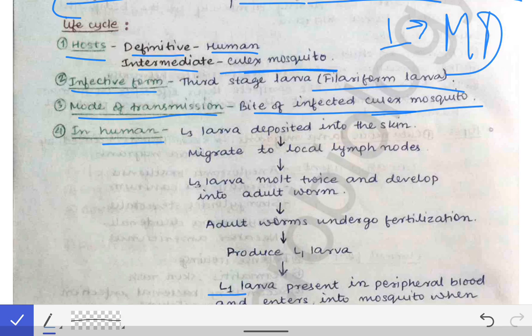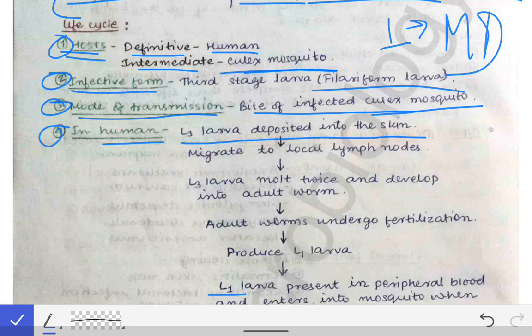When writing the life cycle of any parasite, start with the host, then the infective form, then the mode of transmission, then the development in the different hosts. Here the two hosts are human and Culex mosquito. In the human, the infective L3 larva is deposited into the skin by the mosquito, then migrates to the local lymph nodes where it molts twice and develops into the adult worm.